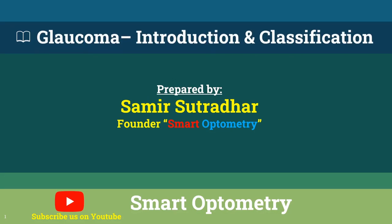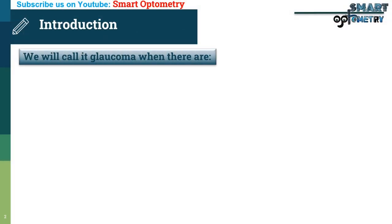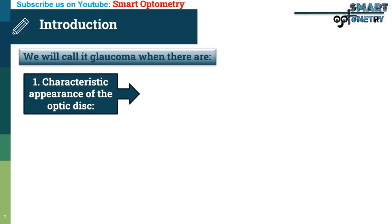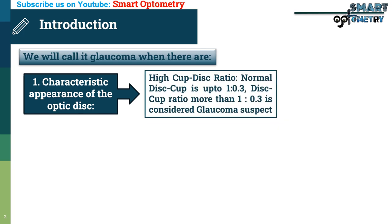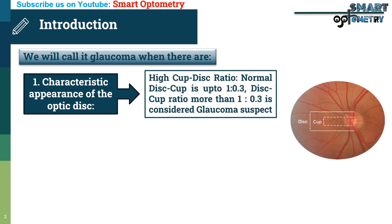Today I will discuss Glaucoma Introduction and Classification. We will call it Glaucoma when there is a characteristic appearance of the optic disc, that is a high cup-disc ratio. Normal disc-cup ratio is up to 1:0.3. A disc-cup ratio more than 1:0.3 is considered a Glaucoma suspect.